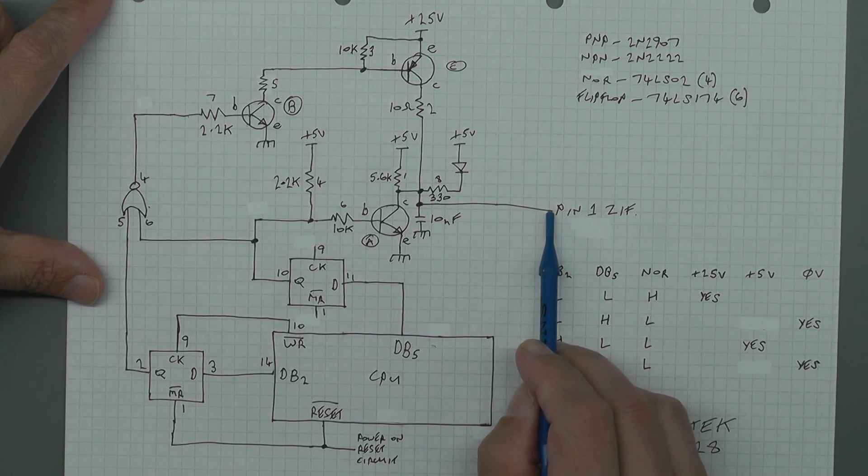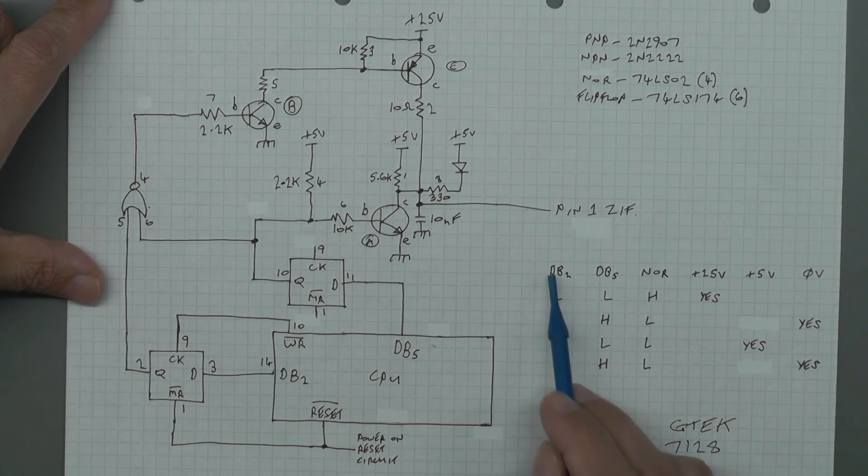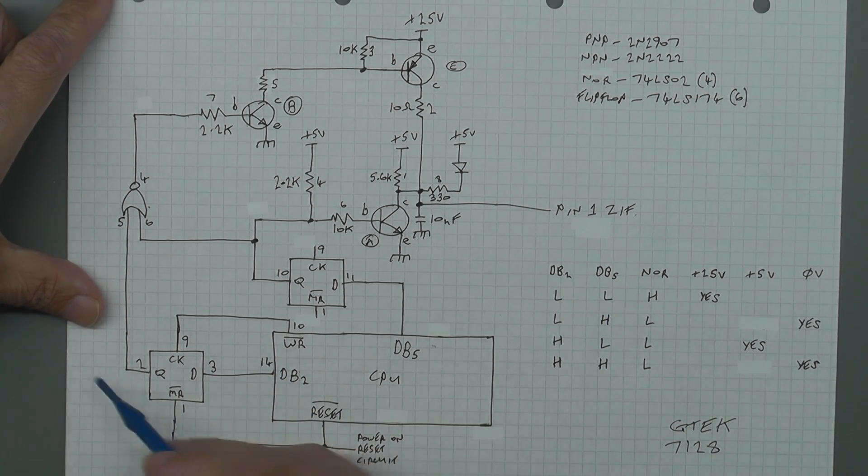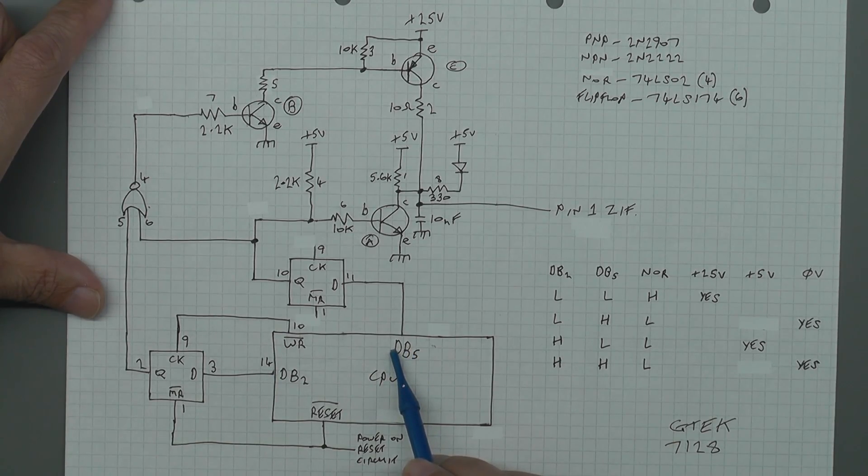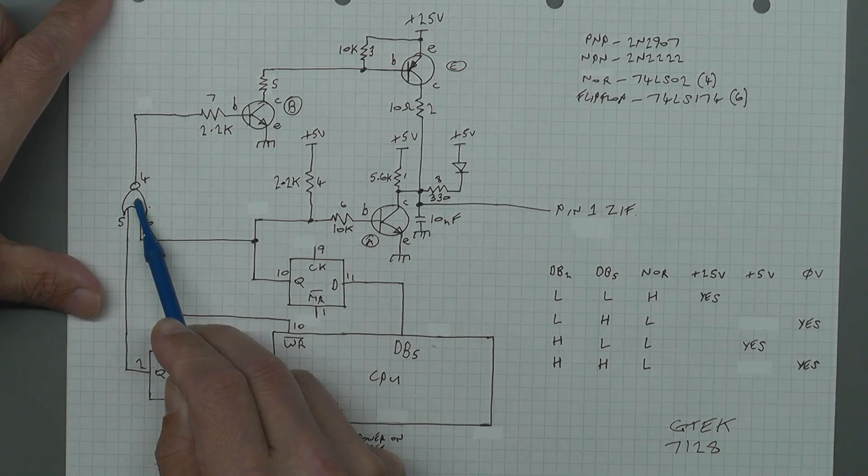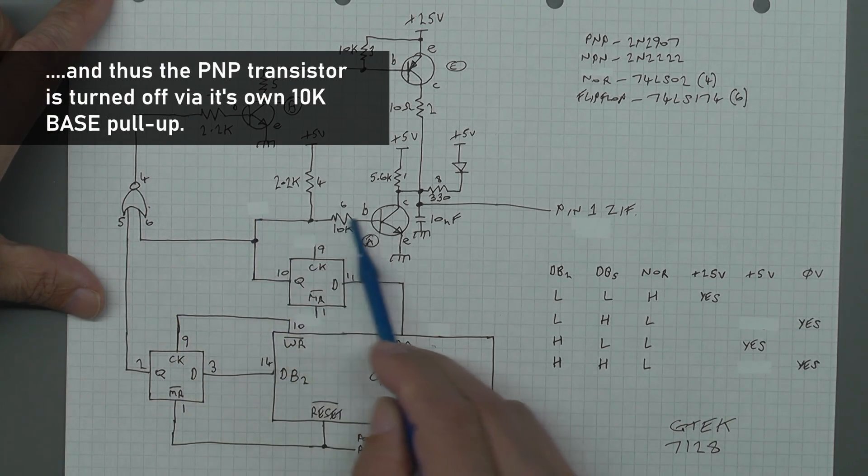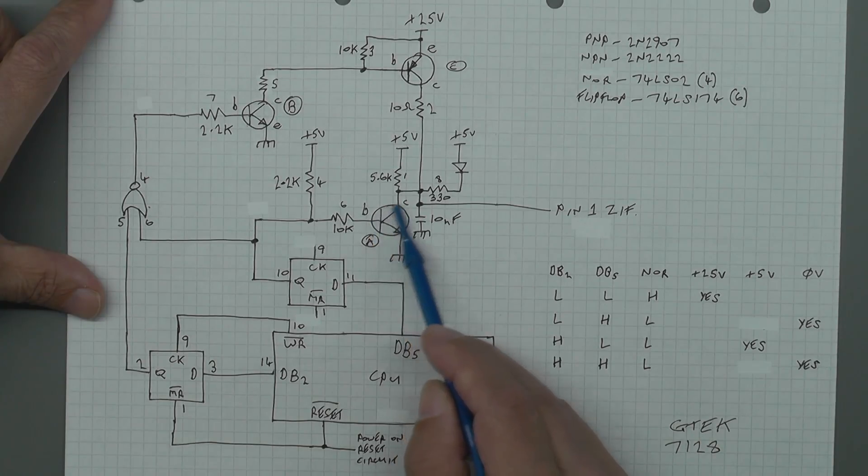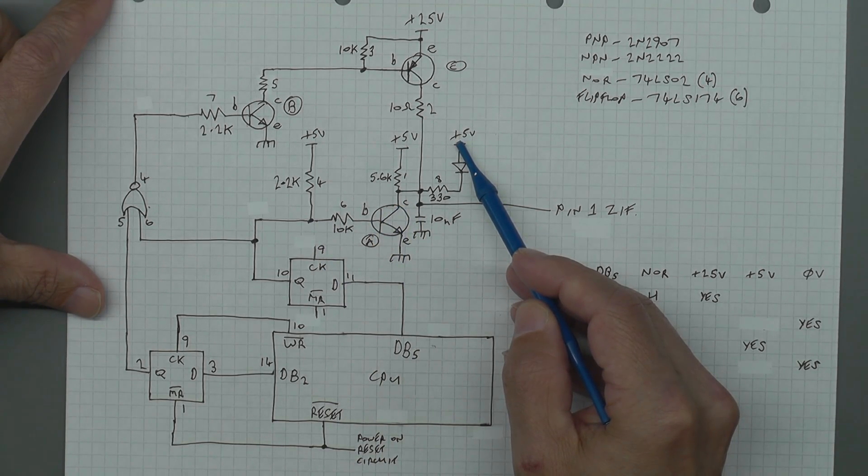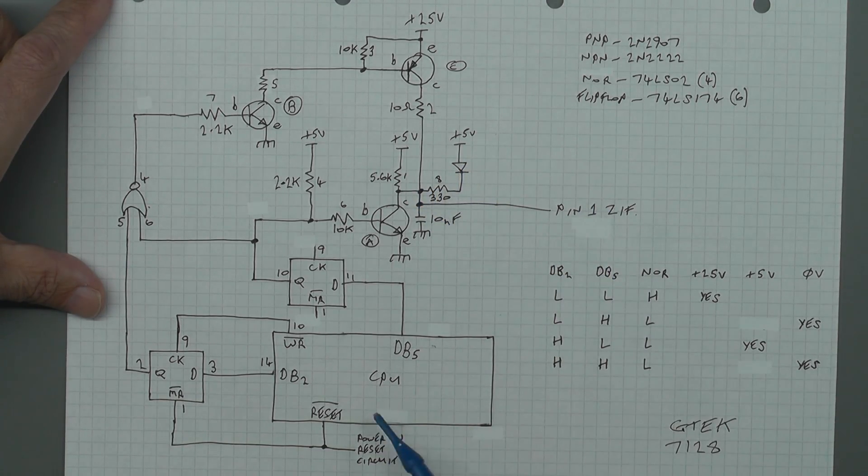Alternatively you might want 5 volts on the pin one. That's achieved according to my truth table by setting db2 to high and db5 to low. That will give a high and a low input onto this NOR gate, which will result in the output from the NOR gate going low. This NPN transistor will be turned off, therefore it's basically not in circuit, and therefore 5 volts will then conduct down through this blocking diode, through the 30 ohm resistor and out to pin one of the ZIF.